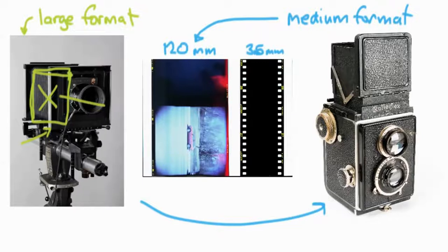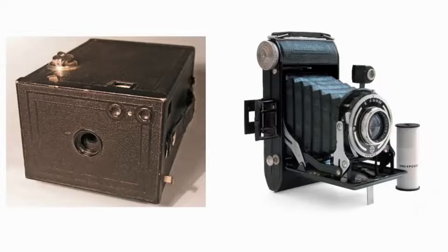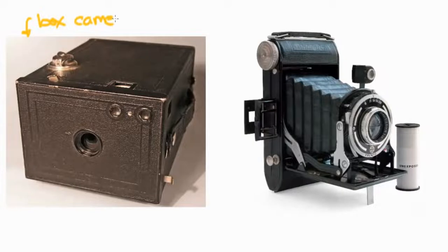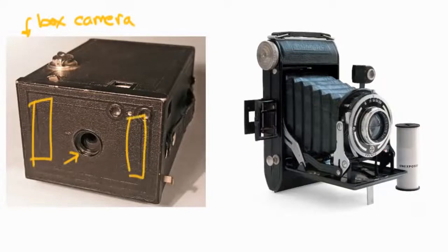Now, going back a bit — right after the pinhole camera came the box camera. The box camera is basically just a little tiny lens on the front of a box. There are probably two spools of film inside: one where the film is coming from and one where it's going back, and the film kind of goes in a big horseshoe shape.